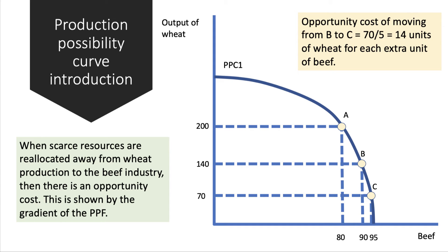So let's say we move from B to C — we gain five extra units of beef, going from 90 to 95, but we have to sacrifice 70 units of wheat. So therefore, the opportunity cost now is 70 given up for five extra — that's 14 units of wheat for each unit of beef. So the gradient of that PPC is becoming much steeper, showing an increasing opportunity cost.